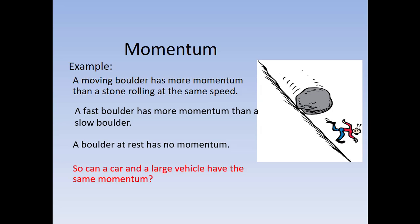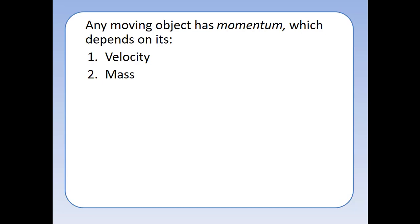Something to think about: can a car and a larger truck have the same momentum? Can two things that are different masses have the same momentum? Yes, if that smaller object is moving faster than the larger object, there could be a way they have the same momentum. Any moving object has momentum and it depends on how fast it's moving, its velocity, and its mass.